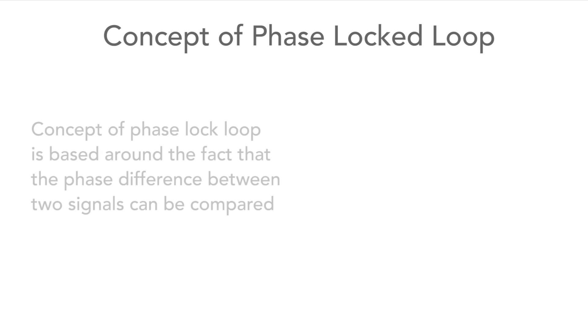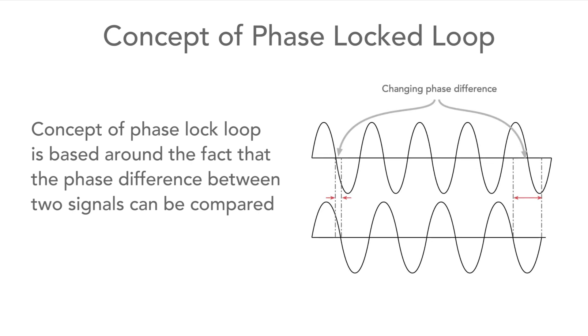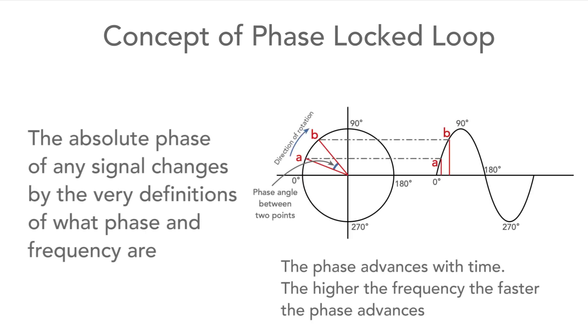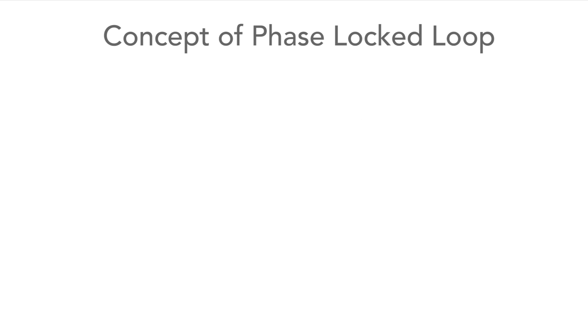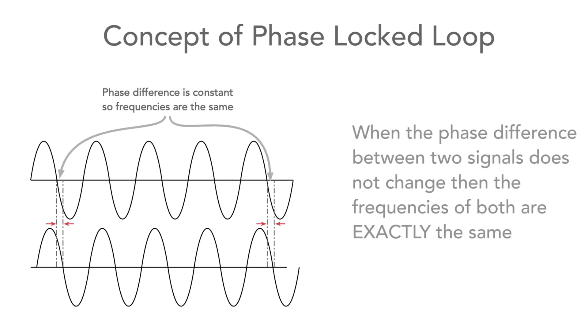The concept of a phase-locked loop is based around the fact that the phase of two signals can be compared. When this phase comparison is viewed, it can be seen that if it's changing, there is a frequency difference between the two signals. Frequency, by its very definition, corresponds to a change in phase. However, when the phase difference is steady, in other words it's not changing, the frequency of the two signals is exactly the same.